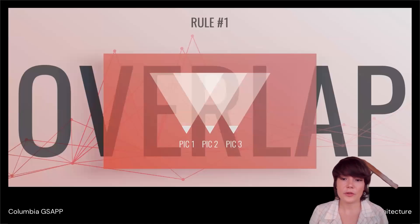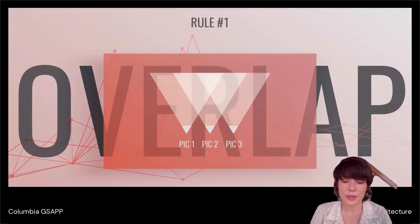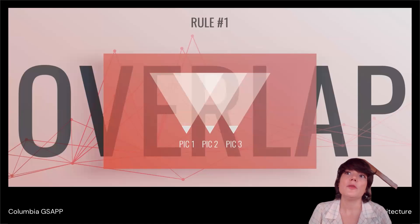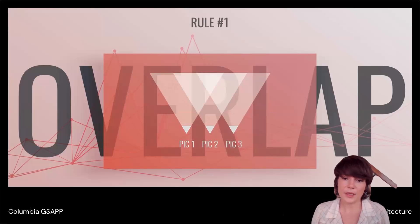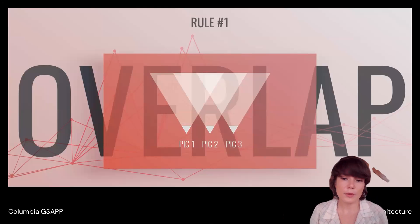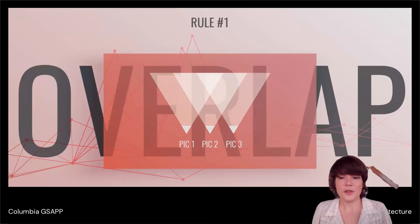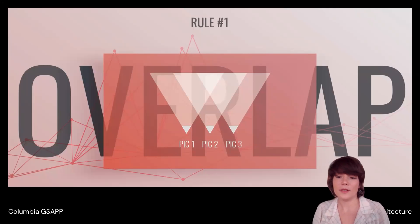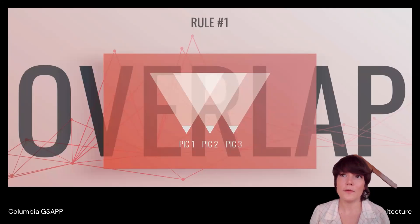That brings us to the first and most important tool of photogrammetry: overlap. When you're taking photos, you need to make sure you have enough overlap so that points can be aligned in space by the software. If not, the software simply won't be able to line them up, you won't get a 3D model, and you really don't want to be doing that manually. The way to make it easy is just by taking lots of photos.